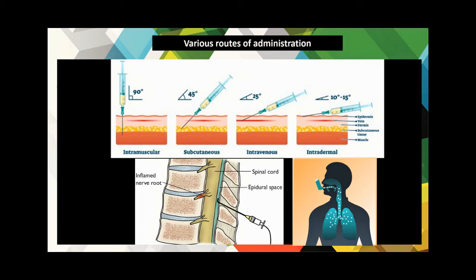In inhalation, drugs are administered through the nasal passage and are of two classes: volatile and non-volatile. Volatile includes oxygen and CO2 anesthetics, while non-volatile includes inhalers and nebulizers (aerosols). Regarding syringe angles: intramuscular is at 90 degrees, subcutaneous at 45 degrees, intravenous at 25 degrees, and intradermal at 10 to 15 degrees into the epidermis of the skin.